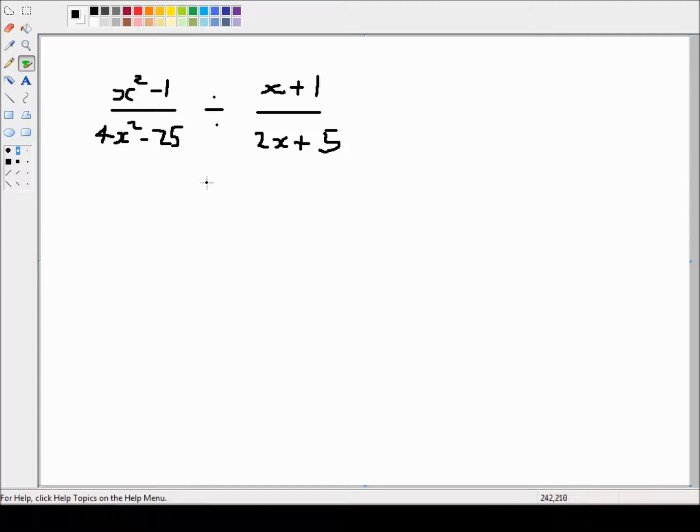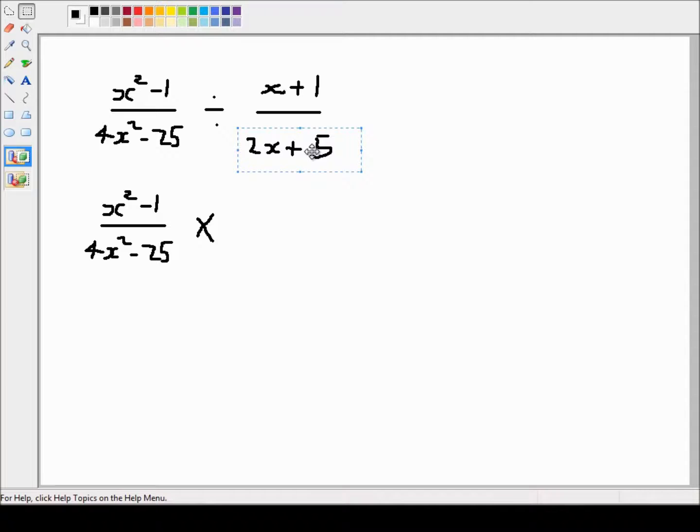So as with any division of fractions we just invert and multiply. So this is basically all of this, and instead of division it's multiply. And this then becomes the numerator. Oops, I should really copy that. So this denominator then becomes the numerator, and the numerator becomes the denominator.